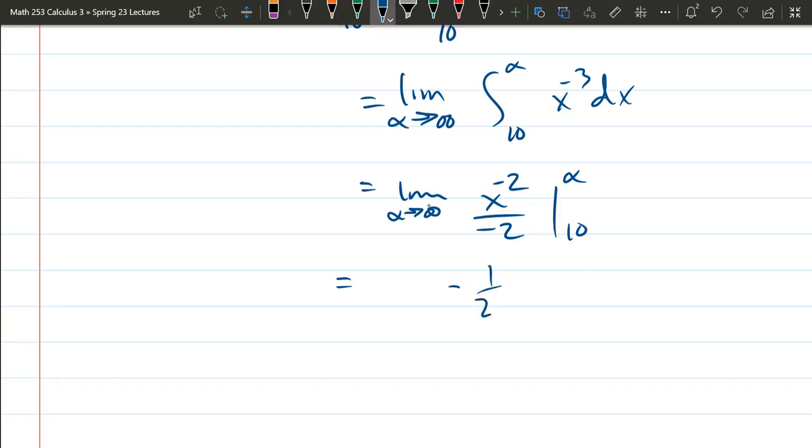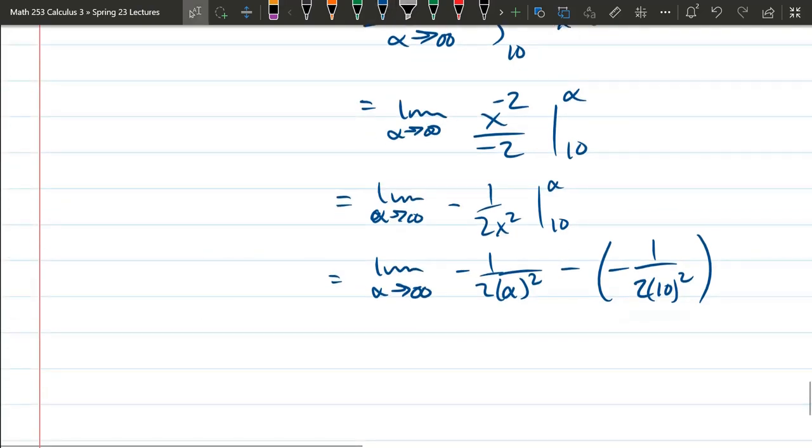So this is negative 1 over 2x squared. And I'm going to go ahead and plug in the values now. Negative 1 over 2 times, we'll do the alpha first, obviously. Alpha squared, that one's going to disappear because alpha is getting really big in the denominator. And the last term. So this first one will be negative 1 over 2 times infinity squared. So the whole thing is going to 0. Plus 1 over 10 squared is 100 times 2 is 200. Plus 1 over 200.